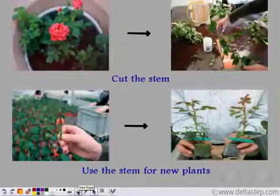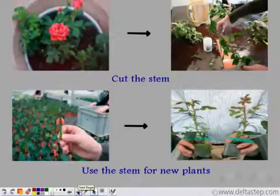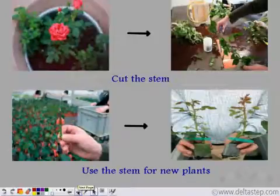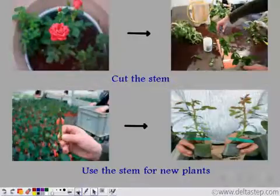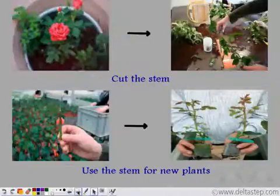Now let us recall vegetative propagation through cutting. What were we doing? If there was an existing rose plant, we could cut a small portion of the stem and sow it on the soil.